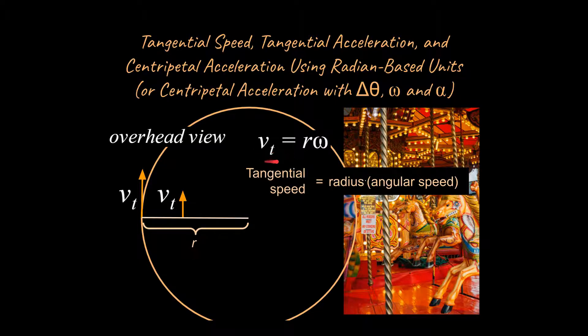So this is a really crucial equation, partially because it relates linear quantities like this tangential speed over here and angular quantities or radian-based quantities over here like this angular speed. So it is actually really crucial for regular physics classes as well as for AP physics classes.